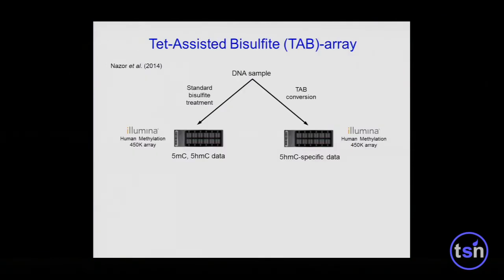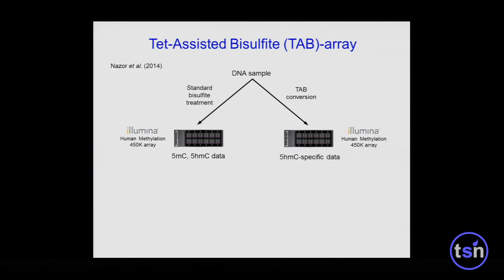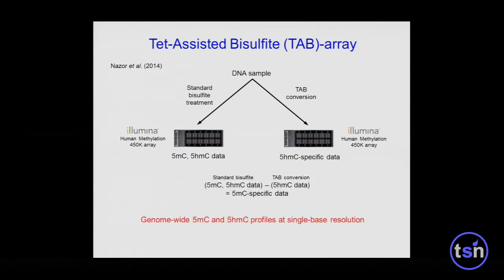Traditional ways of looking at DNA methylation have relied upon sodium bisulfite treatment. The big caveat we discovered is that sodium bisulfite treatment does not distinguish between 5-methylcytosine and 5-hydroxymethylcytosine. So we teamed up with our collaborator Chuan He at University of Chicago and Jian Bing at Illumina to develop the TET-assisted bisulfite TAB array, in which through a series of chemical protection modifications you can generate 5-HMC-specific data on the same human DNA methylation array that Illumina sells. If you bioinformatically subtract the TAB conversion or 5-HMC-specific data from standard bisulfite, what you get are 5-MC-specific data.